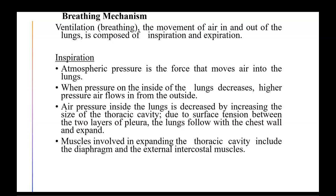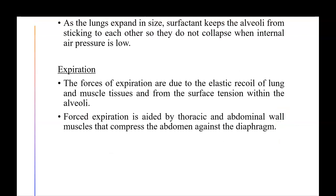The muscles that expand the thoracic cavity are the diaphragm and the external intercostal muscles. These breathing muscles are notably the last to go into atrophy during illnesses such as ALS or Lou Gehrig's disease. As the lungs expand, a fluid called surfactant inside the alveoli prevents them from sticking together and collapsing when internal air pressure is low — functioning much like dish detergent to keep alveolar surfaces from adhering.